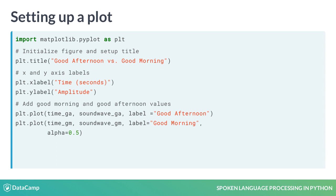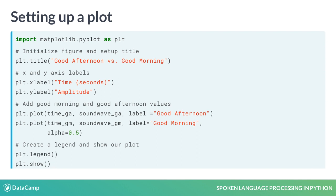To make sure we can highlight the differences, we'll add an alpha parameter of 0.5 to the good morning values. This is so they appear slightly transparent on the plot. Since we've given our data labels, we can create a legend by calling the legend method on our plot. And now everything is set up, we can see our plot by calling the show method.